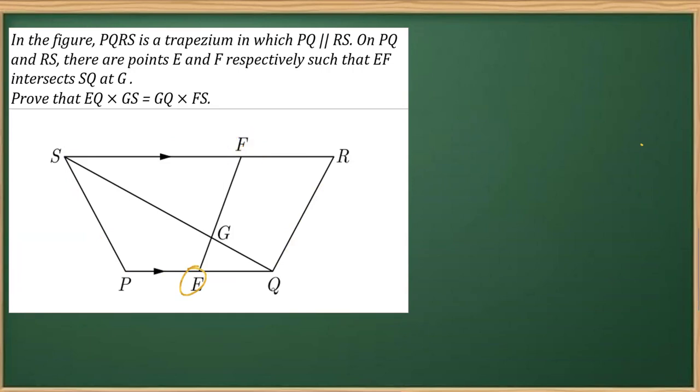These points are joined to meet the line SQ at point G. This is the point at which they are meeting. What we have to prove in this question is the two-proof part.